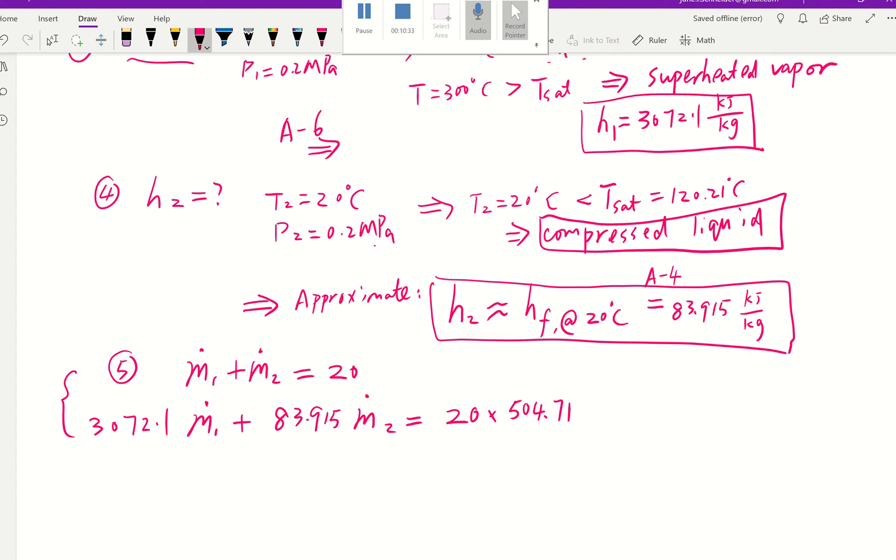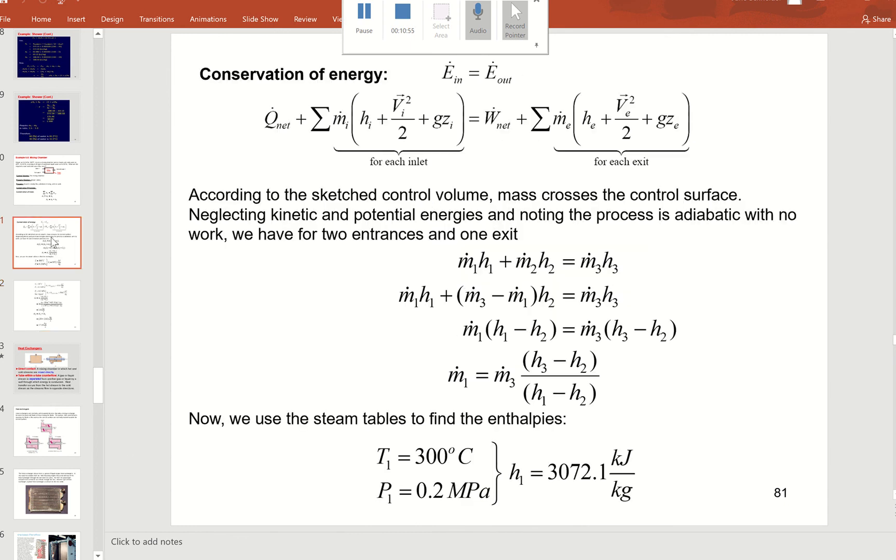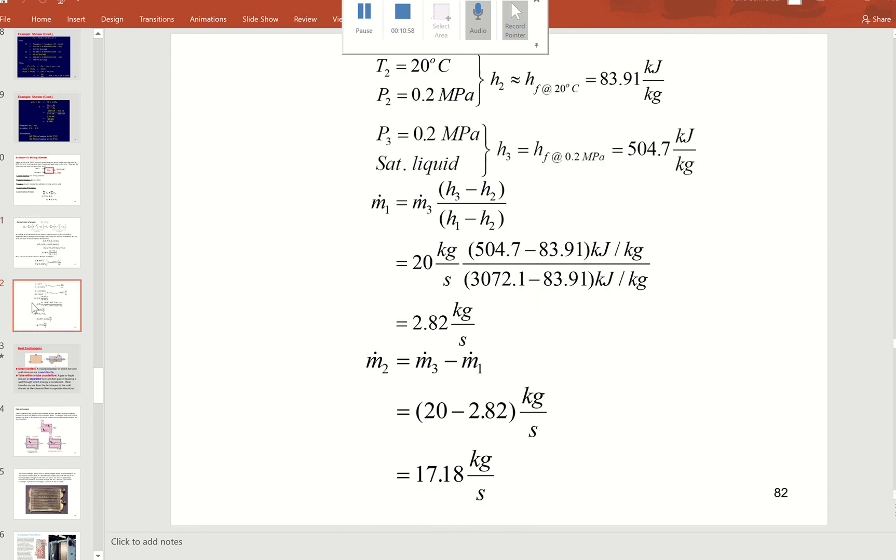Okay, so we have those two equations. It's a linear system of equations and we can put it into our calculator to set up a matrix or whatever you decide to do. Then you can get the answer for this mass flow rate. So I'm going to ignore that calculation. This shows us ṁ₁ is going to be 2.82 and ṁ₂ is going to be 17.18.